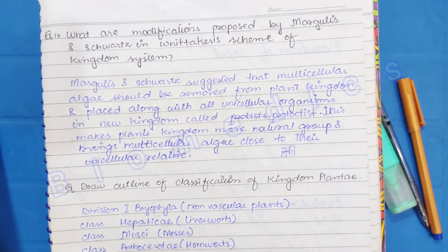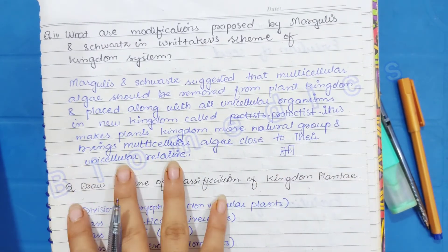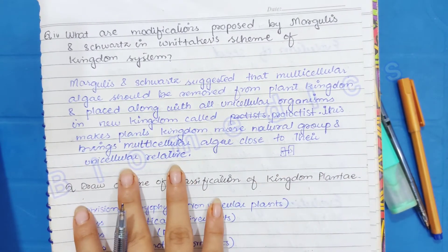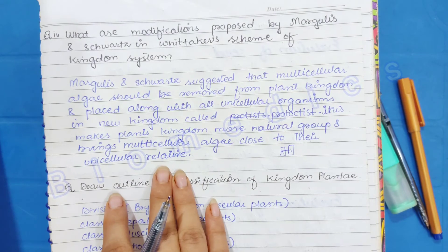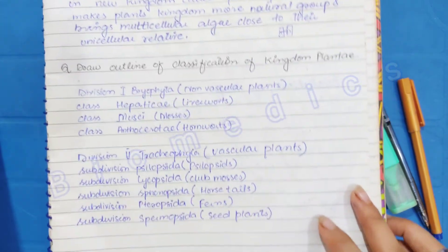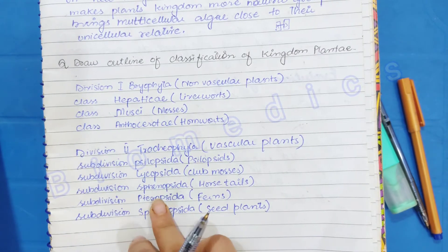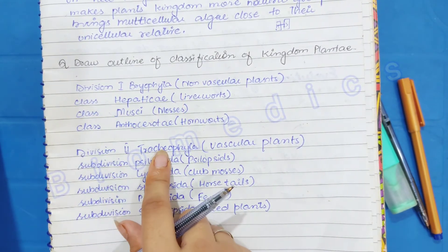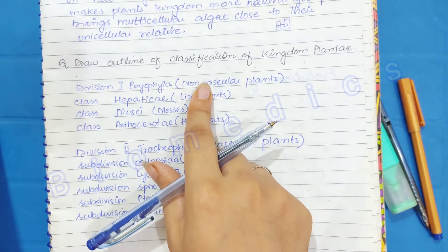This was creating confusion because the multi-cellular algae did not resemble the plants so much, and the unicellular algae in the other kingdom were very similar to each other. When they were removed from the plant kingdom and placed into Protoctista, they came closer to their related unicellular algae group. After that, we have to draw the classification of kingdom Plantae. We can also write it in chart form. The first division is Bryophyta and the second one is Tracheophyta. Bryophyta are non-vascular plants — small plants that don't have much vascular tissue.